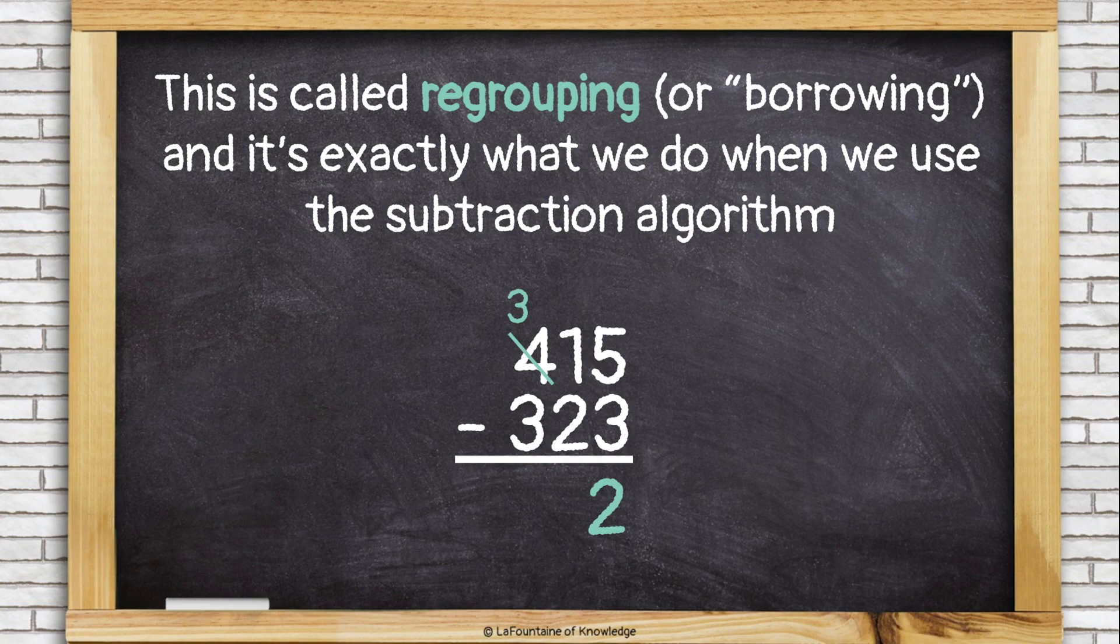So I had one 10, and I just got 10 more of them. So now I have 11 tens. And now I can take 2 of them away, leaving 9 tens. And 300 minus 300 is nothing. So my answer is 92.